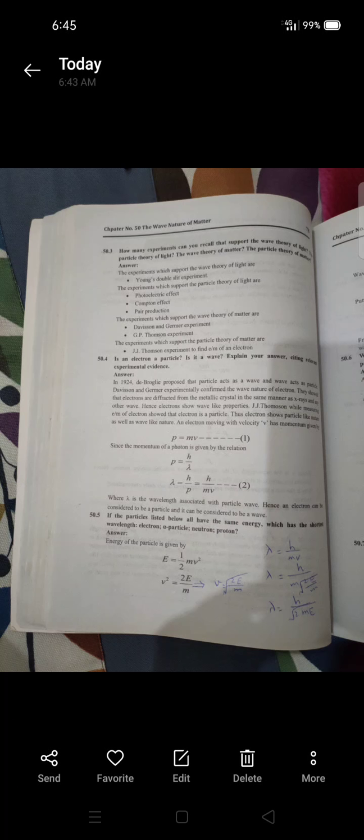Next short question is: Is an electron a particle? Is it a wave? Explain your answer citing relevant experimental evidence. This is similar to the first short question. In 1924, de Broglie proposed that particles act as waves and waves act as particles.